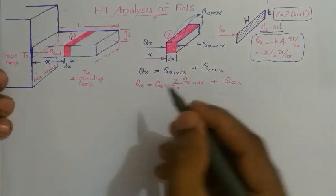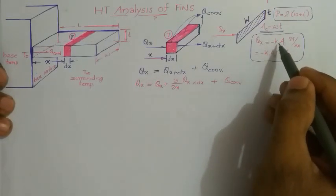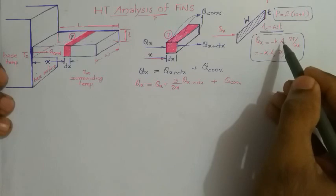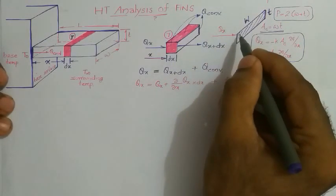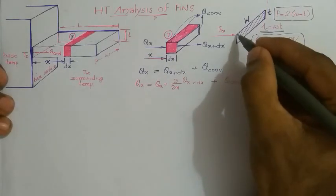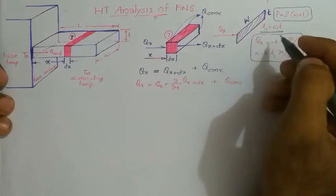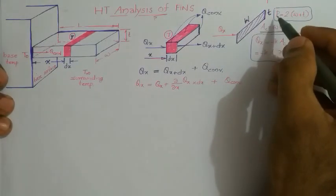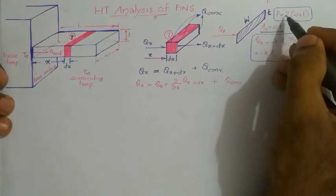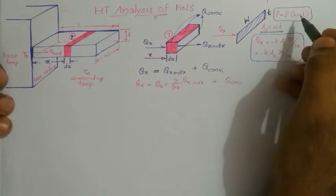Here qx can be expressed using Fourier's law, where qx equals minus k multiplied by the normal area to the direction of heat flow. Since heat is flowing along the x-direction, the normal area is the cross-sectional area of the fin, which is W times T. The perimeter for this rectangular cross-section is written as 2 times (W plus T).